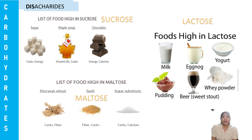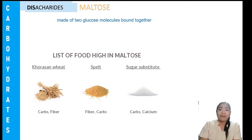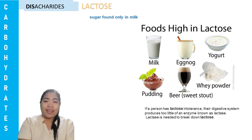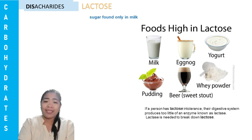Disaccharides also have three types: sucrose, maltose, and lactose. Sucrose is also known as common sugar. It is extracted and refined from either sugar cane or sugar beet. These are examples of sucrose. Maltose is made of two glucose molecules bound together. Lactose can only be found in milk. If a person has lactose intolerance, their digestive system produces too little of an enzyme known as lactase. Lactase is needed to break down lactose. These are examples of lactose.